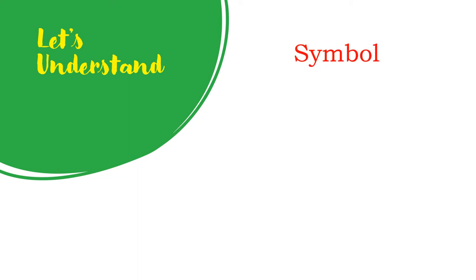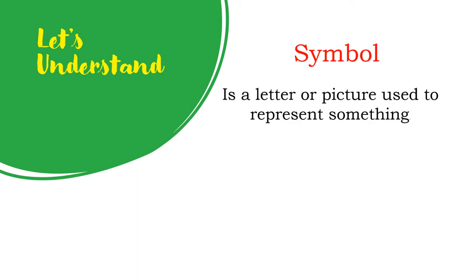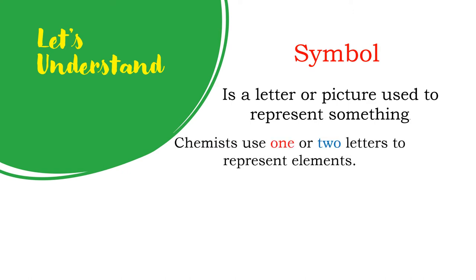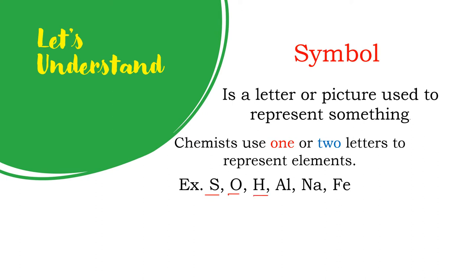Let's understand our concept for this week. A symbol is a letter or picture used to represent something. Chemists use one or two letters to represent elements. For one-letter symbols, we have S for sulfur, O for oxygen, and H for hydrogen. For two-letter symbols, we have Al for aluminum, Na for sodium, and Fe for iron.